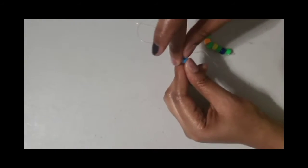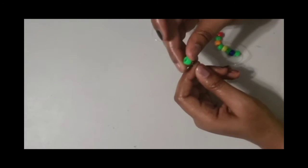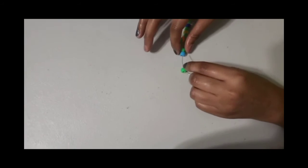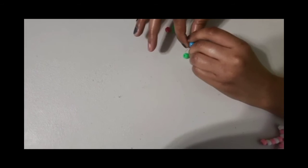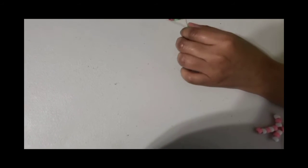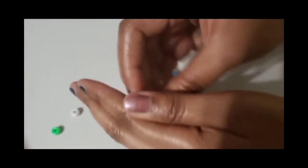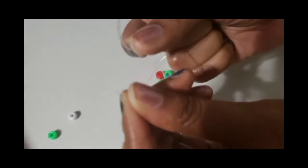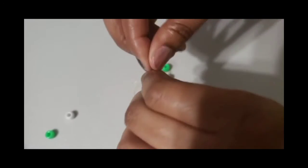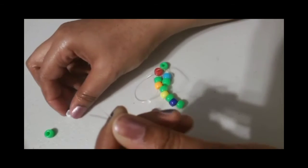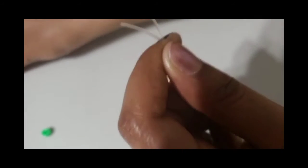And then you loop the strings back through the first and second beads. And do the same thing to the other side. Put three beads on there, and loop. Pull it really tight. Then you pinch the two. Then you take the two strings, and you put the beads through there. Three beads, your last three beads.